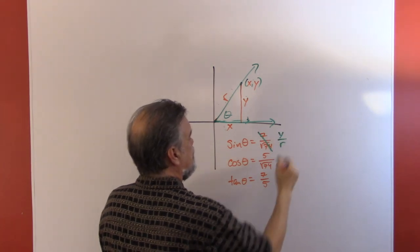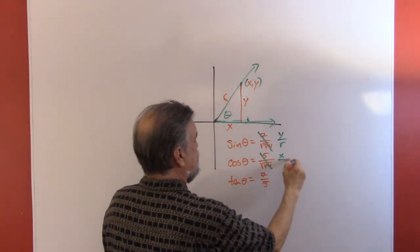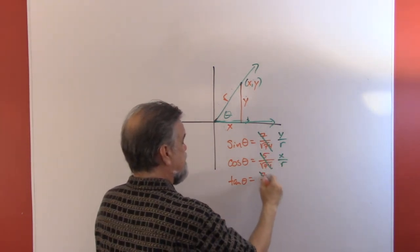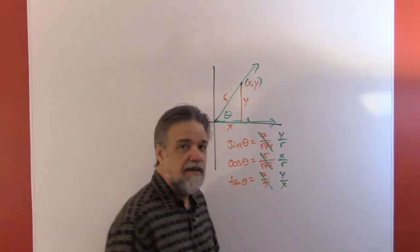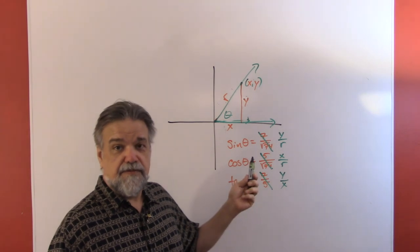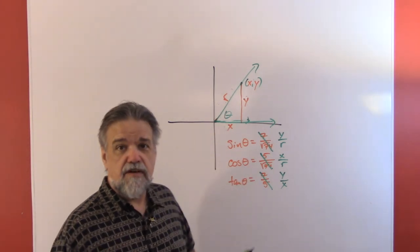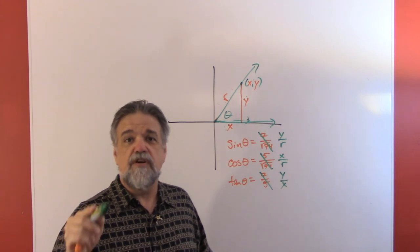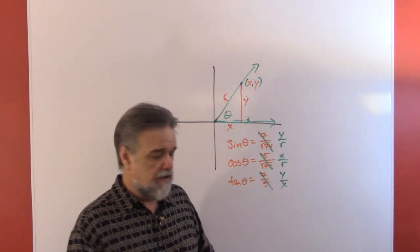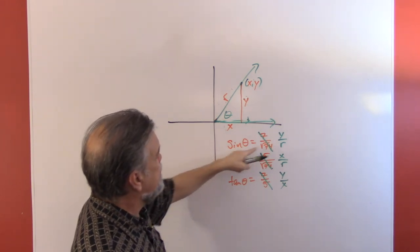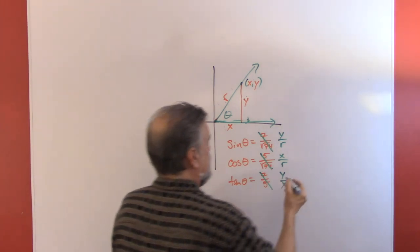The cosine of theta is going to be equal to x over r, and the tangent of theta is going to be equal to y over x. Now, this problem that we did long ago—r and theta are the exact same r and theta that we're using for polar coordinates. It's really similar.